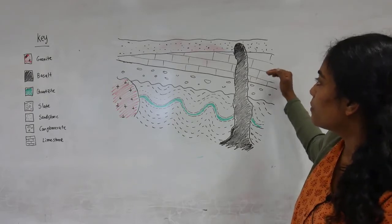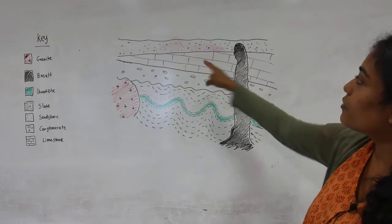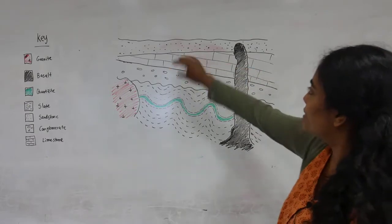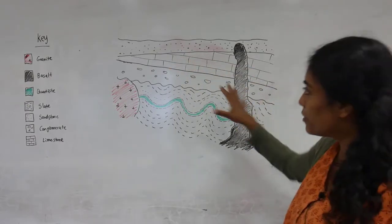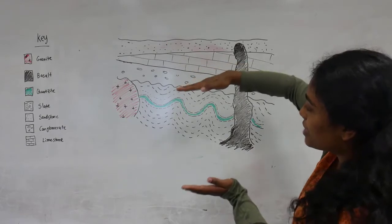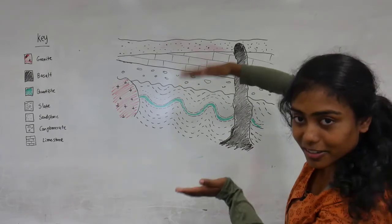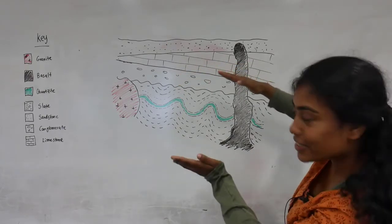Then all of this, you can see that all of this stuff is tilted, right? So then what would have happened next is these sediments that were originally horizontal would have been tilted like this.